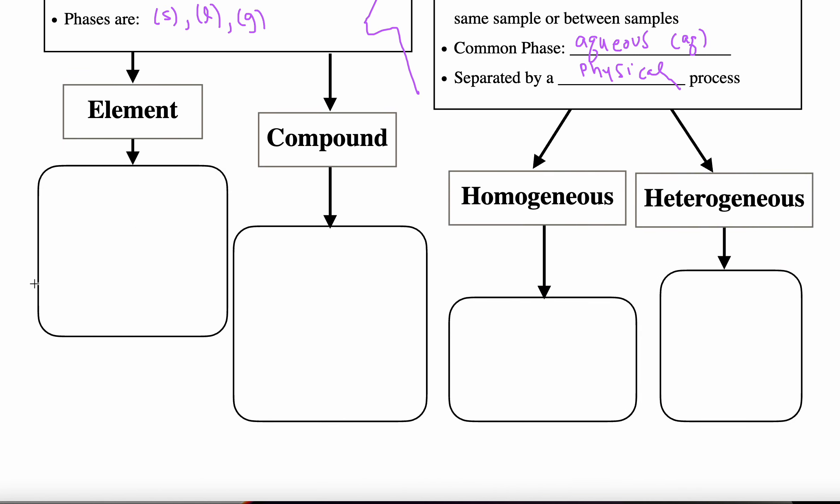So now substances, we can actually subclassify them into two major categories. So a substance only has one type of particle present within the sample. All the particles are identical. Our two major categories of substances are the element and the compound. An element is a substance in which there is only one type of atom. Notice it doesn't say there's one atom. There's one type of atom.